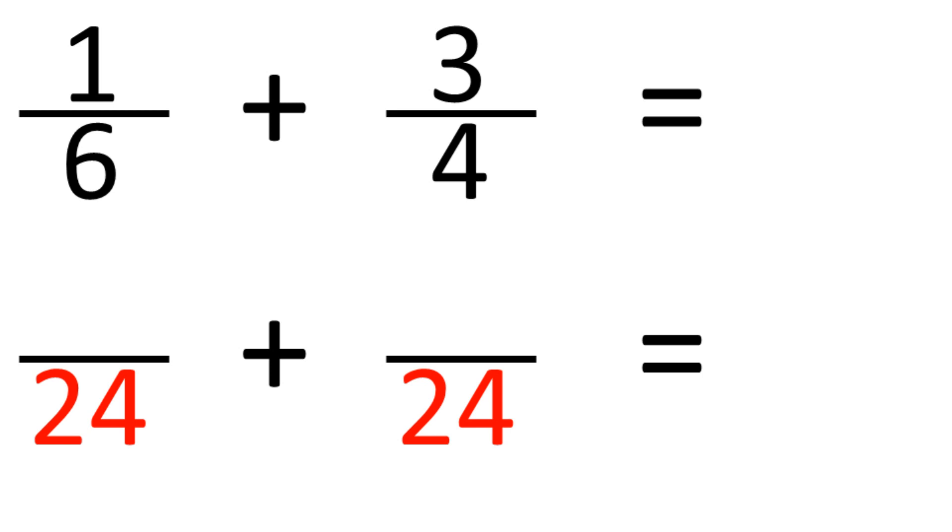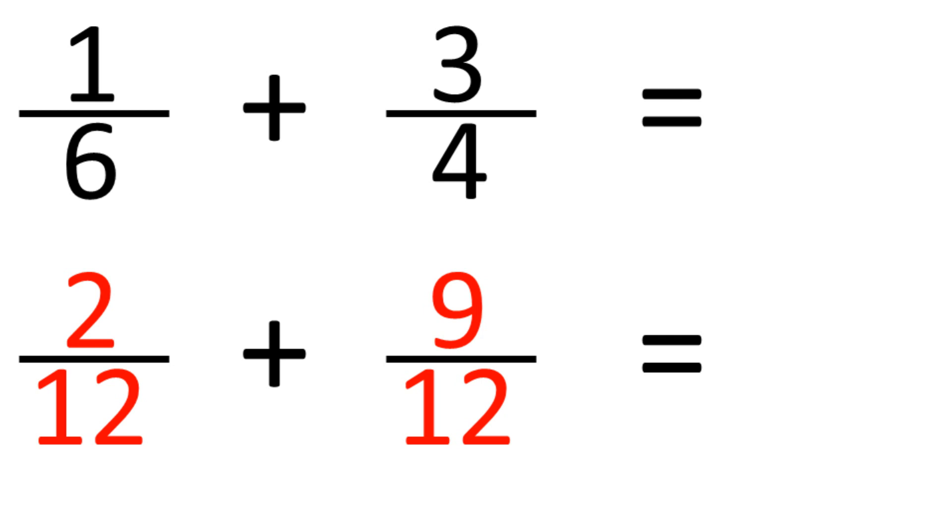So I'll do the sum using both methods, first with 12 as the common denominator. Now I had to multiply 6 by 2 to get 12, so I also need to multiply the numerator by 2. And so 1 sixth becomes 2 twelfths. And I had to multiply 4 by 3 to get 12, so I multiply the numerator by 3, 9 twelfths. Now we have the same denominator, so we can simply add the numerators. 2 plus 9 equals 11, the answer is 11 twelfths.